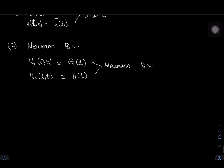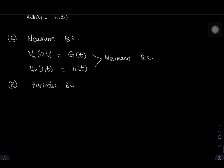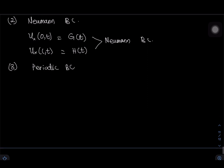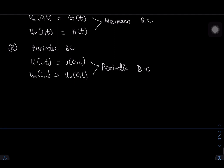Next are the periodic boundary conditions. With periodic boundary conditions, what happens at one border is also happening at the other border. So u(L, t) equals u(0, t), and similarly u_x(L, t) equals u_x(0, t). What happens at one boundary, the same thing is happening at the other — including the derivatives.